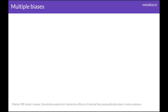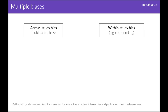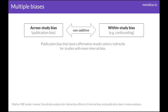Finally, let's look at multiple biases operating in concert. In addition to across-study biases like publication bias, meta-analyses can be compromised by within-study biases — for example, unmeasured confounding in non-randomized studies. Critically, these biases often operate non-additively, because publication bias that favors affirmative results selects indirectly for studies with more internal bias. The sensitivity analysis builds on the method for publication bias by additionally considering the distribution of internal biases across studies.